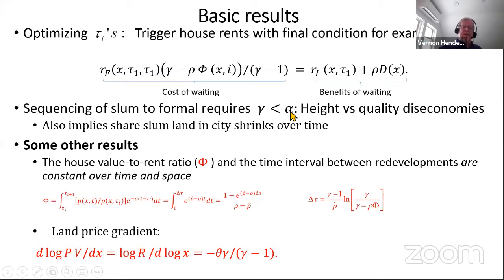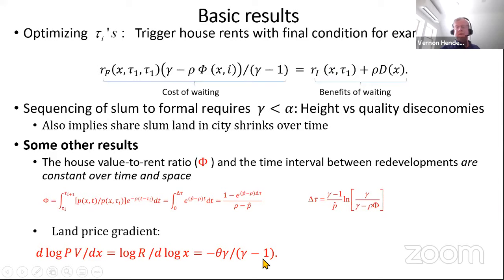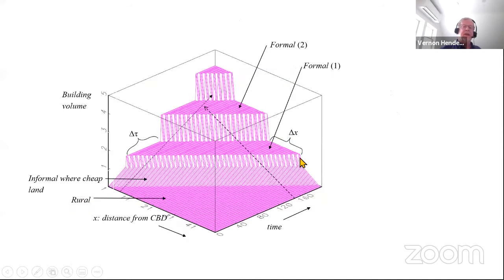The sequencing from slum to formal sector development requires that the diseconomies in the slum sector from crowding exceed the diseconomies from height. We have expressions for the rent, the value-to-rent ratio, and the length of life of a building, as well as a gradient for land prices to estimate in the model.